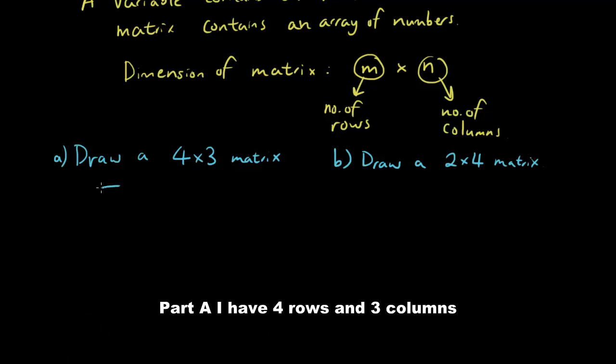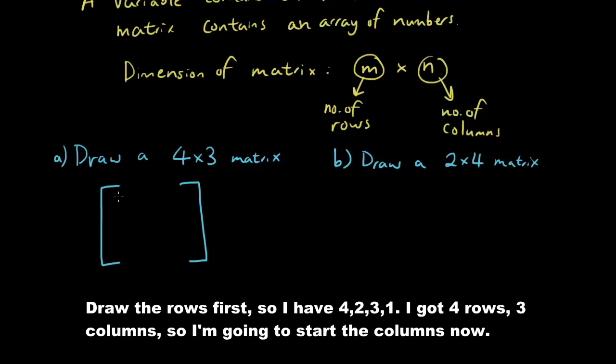Okay, so part A. So I have 4 rows and 3 columns. So I'm going to draw the rows first. So I have 4, 2, 3, 1. I got 4 rows and 3 columns. So I am going to start the columns now.